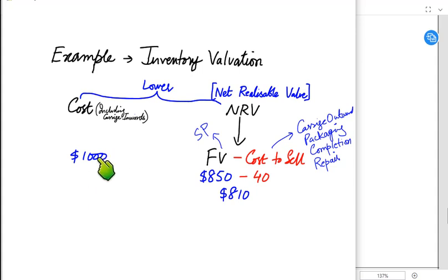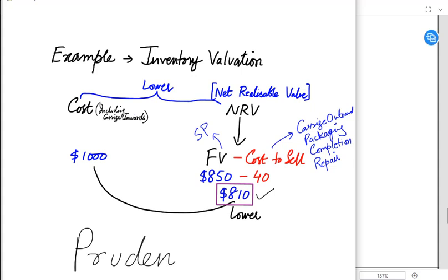The iPhone originally cost us $1000, but we would be able to sell it for $810 only. The lower price from both of these values - cost and NRV - would be obviously NRV. And this is basically the application of Prudence Concept.